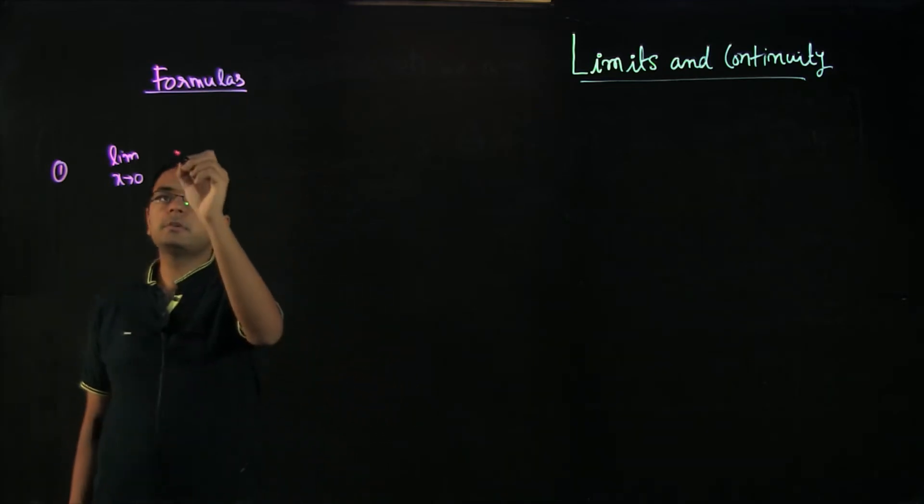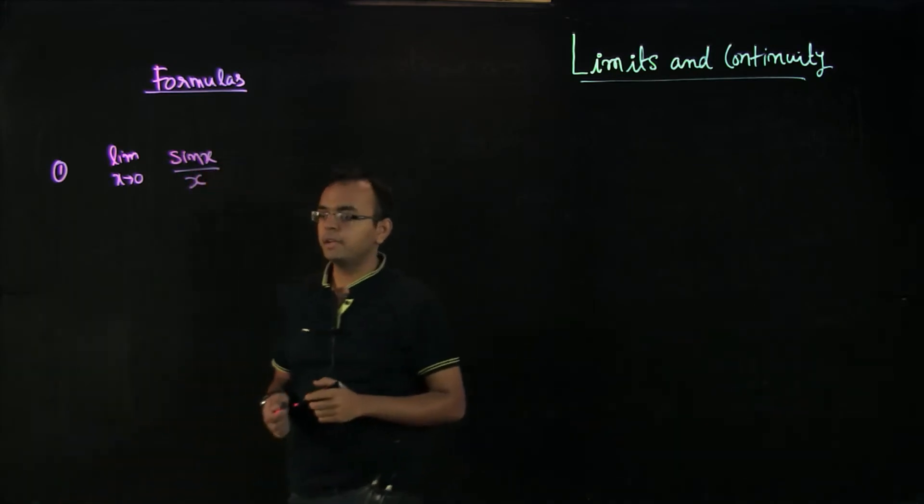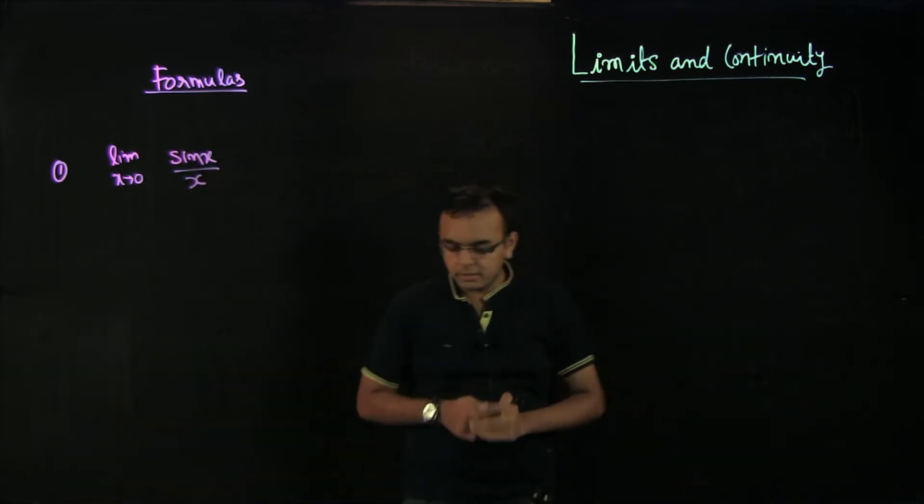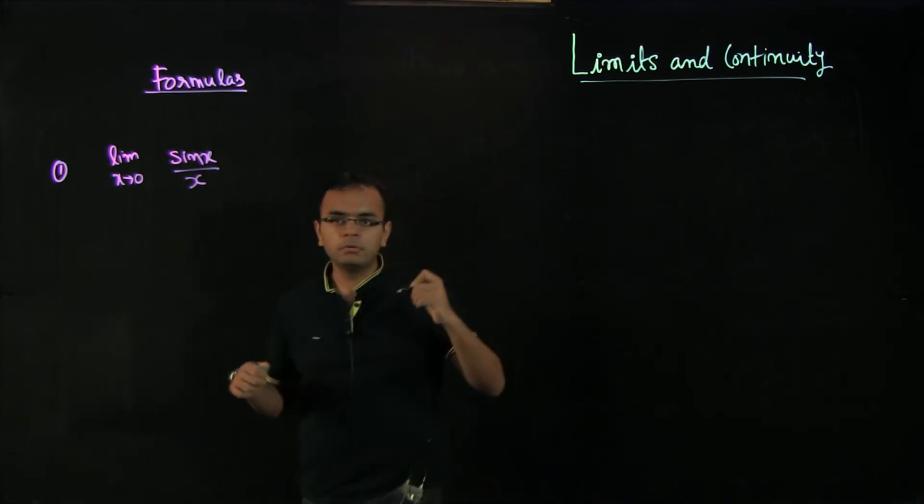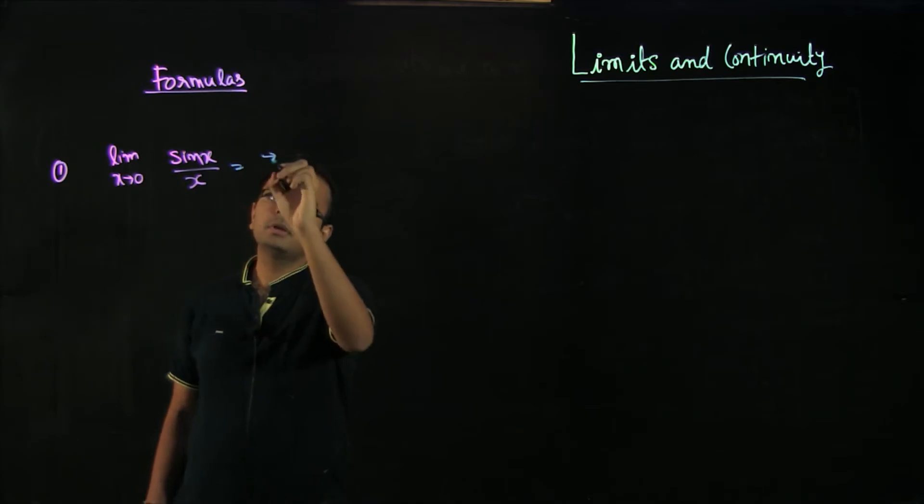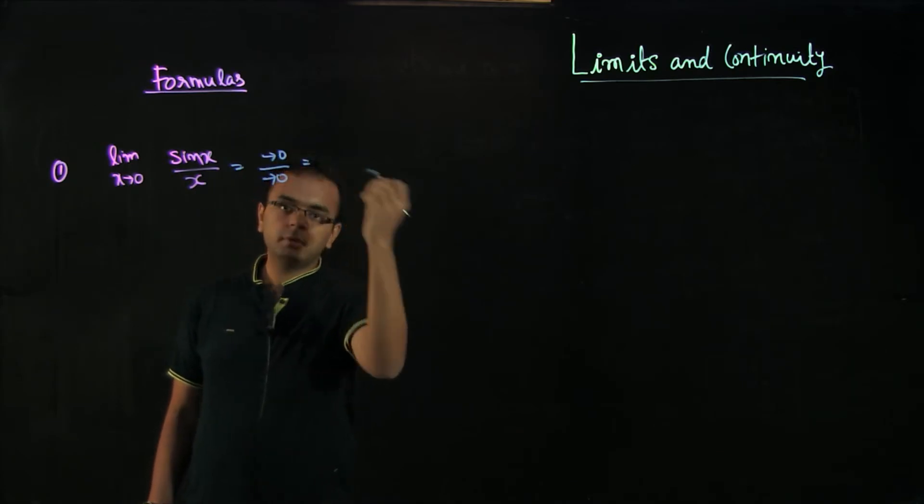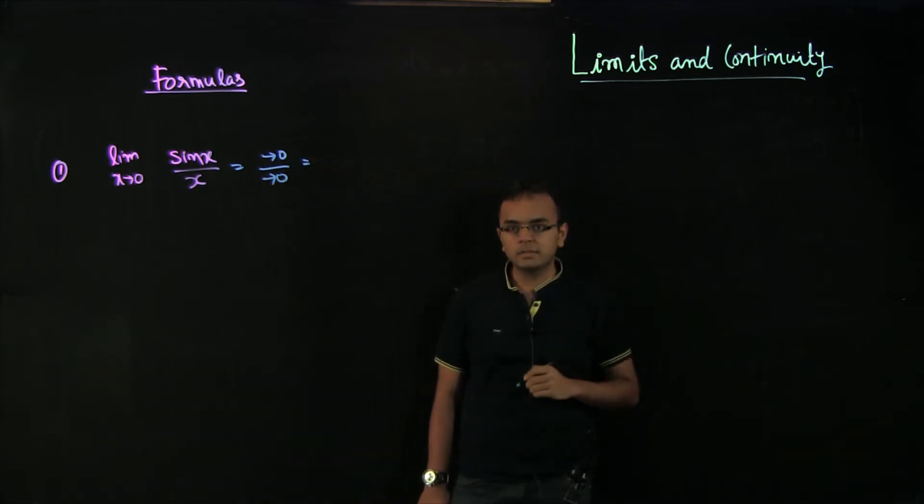One of the formulas which is probably the most widely used for limits and continuity is limit x tends to 0 of sin x by x. If I directly substitute sin of 0, this is approaching 0 by approaching 0. This approaching 0 by approaching 0 form is indeterminate, which is what we discussed in the last video.